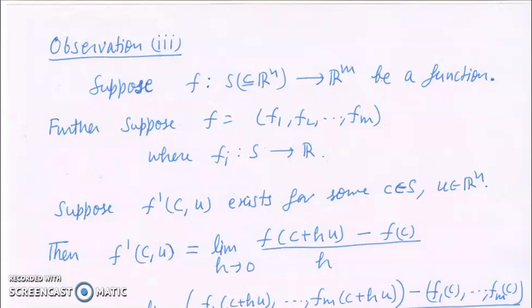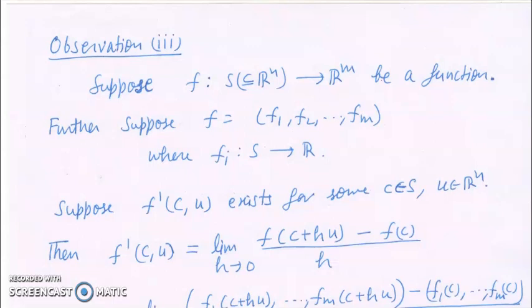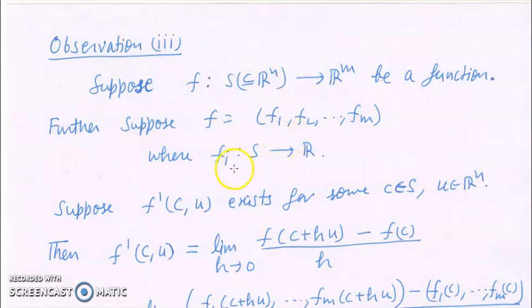Observation number 3: suppose f is a function from a subset S of Rn to Rm. Because the range of f is Rm, f has m components: f1, f2, ..., fm, where each fi is a function from S to R, with i varying from 1 to m.